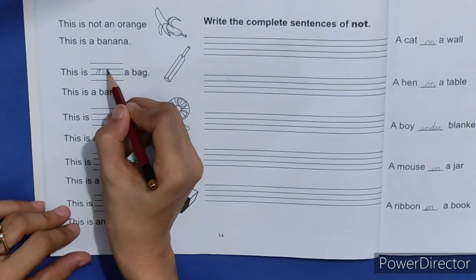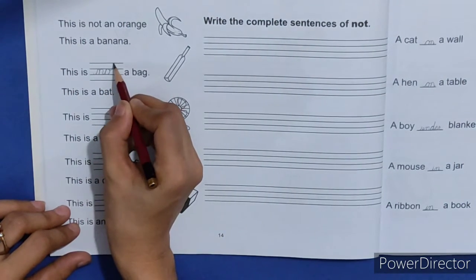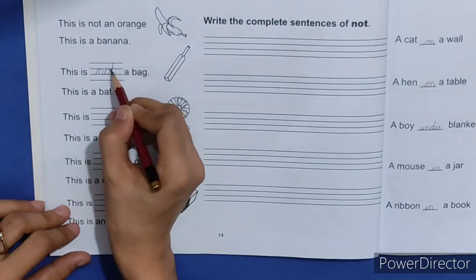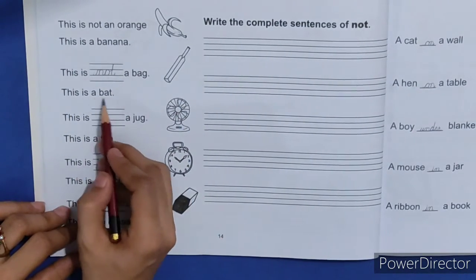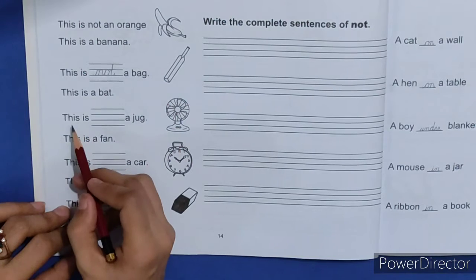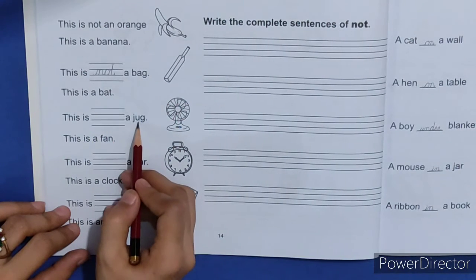Aapne line ko follow karna hai. Aapko yahaan padi aapne usi neat handwriting mein likhna hai. This is a bat. This is dash a jug. Ye jug hai.